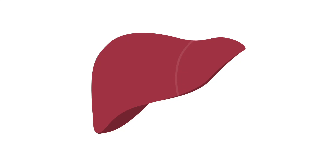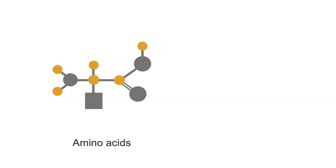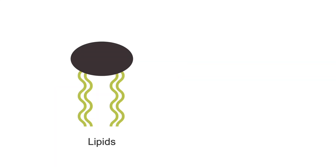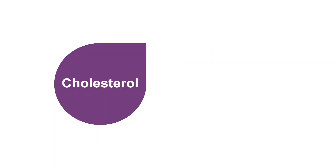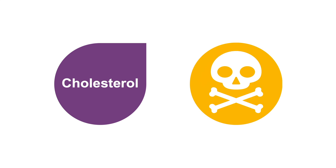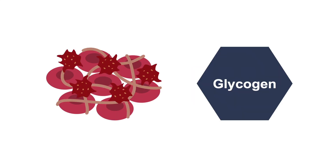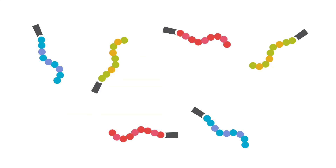The liver is the largest internal organ of the body. It is involved in processing dietary amino acids, carbohydrates, lipids, and vitamins. It also metabolizes cholesterol and toxins, produces clotting factors, and stores glycogen.